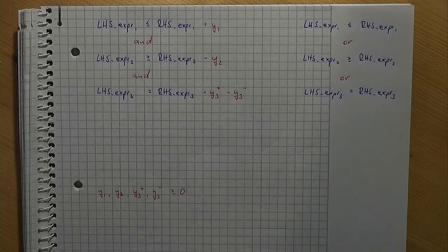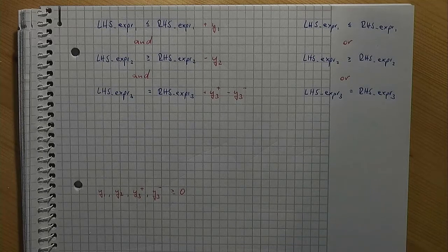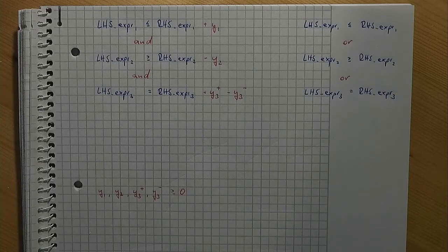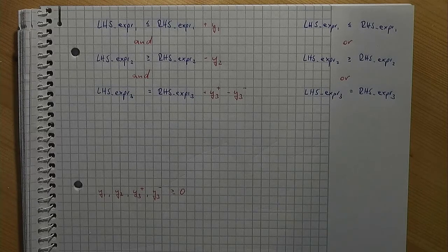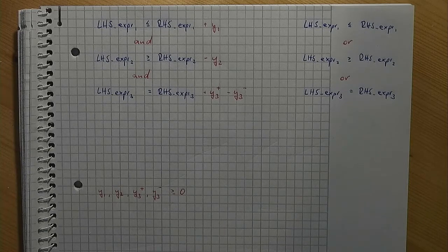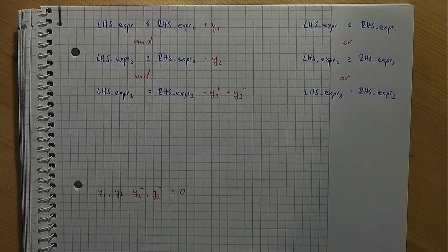This of course is not what we want and we have to combine this with another idea that we know from a video on Big M formulations. For each constraint we can introduce an additional binary variable that indicates if or if not the y variable in that constraint can have a positive value, which in turn is our tool of choice to remove that constraint from the model. Let's call these variables z1, z2, and z3.